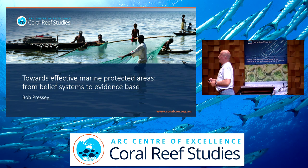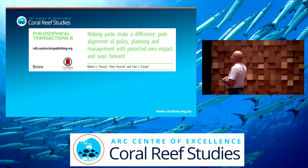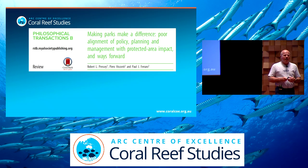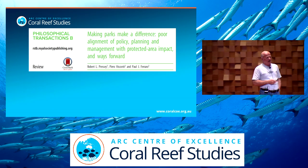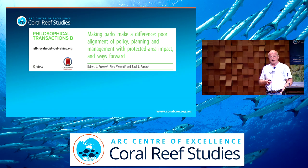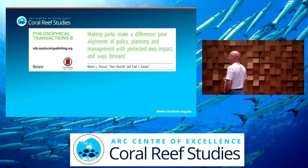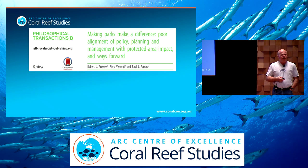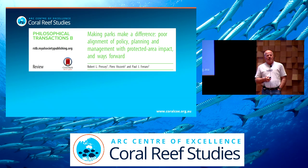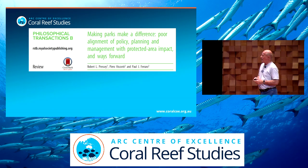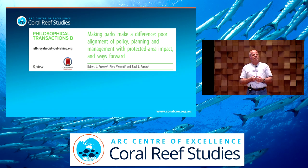I'm starting with an idea called protected area impact. This paper is just about to come out and it defines a protected area impact. Impact is one of those terms that has about six different meanings depending on where you come from. I mean it here in the sense of program evaluation, which is very widespread in development aid, medicine, and education, where people are working out how much difference they make with an intervention. Protected area impact in this context is how much difference we make by establishing our protected areas relative to the default of not having them there.